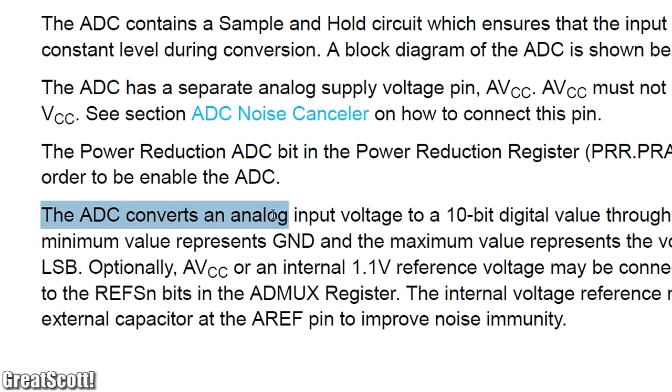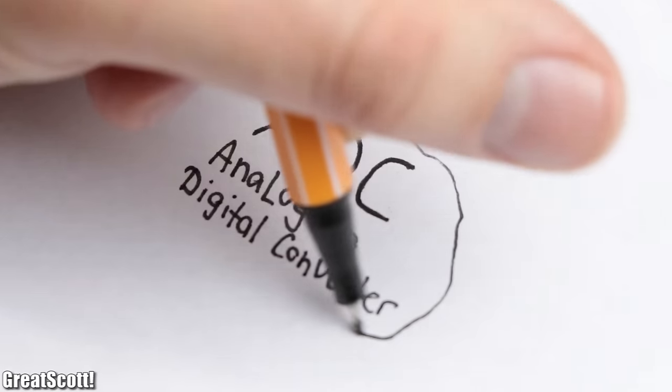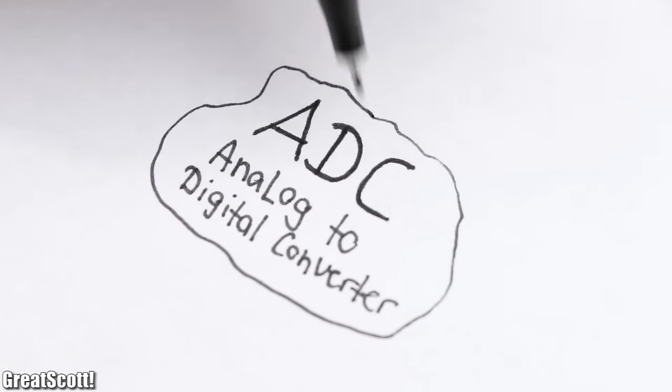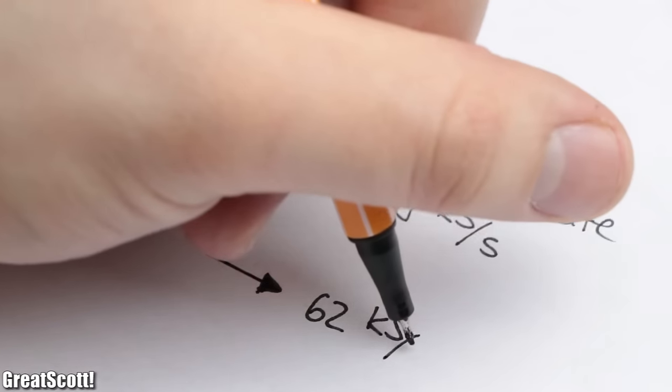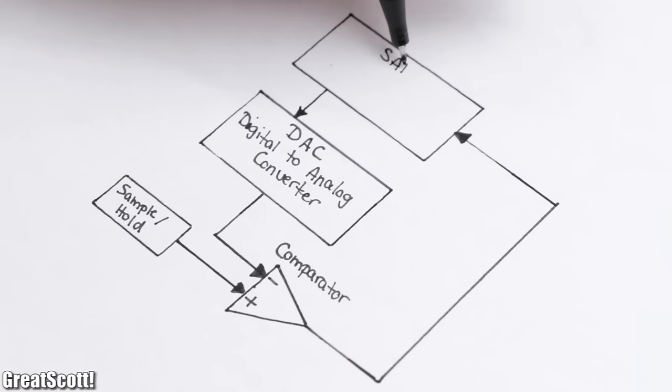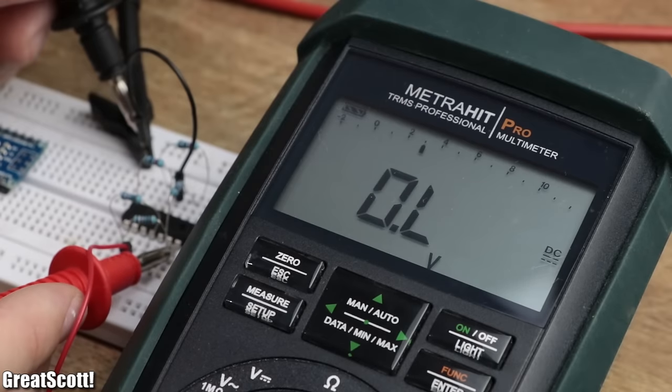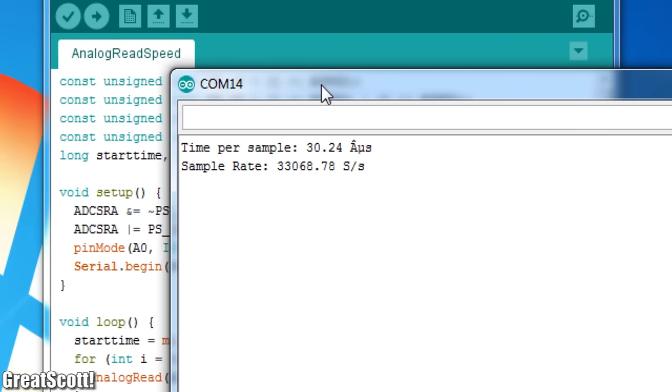The part of the microcontroller which fulfills this function is called ADC, aka analog to digital converter. But what specifications are important for an ADC? How does it work and can we even build one by ourselves? Let's find out!